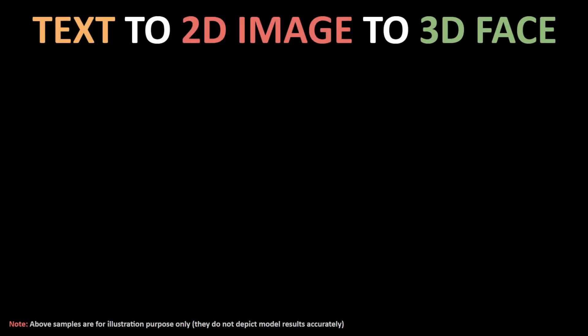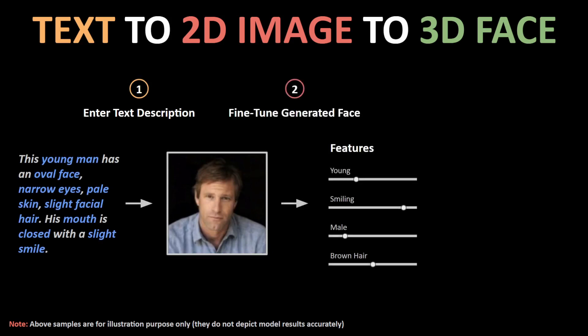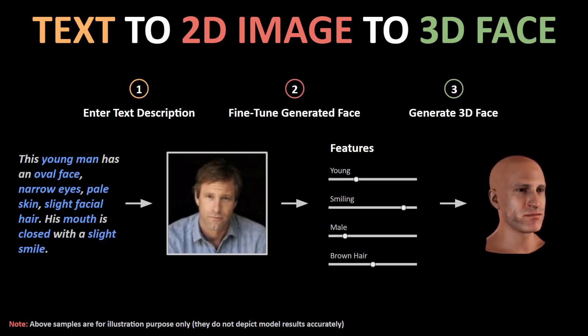Now imagine if we can combine all these methods into a single framework — we could easily build a tool that first takes a text description input and produces a random face fitting that description. Then we can fine-tune this generated image to match our exact imagination with a few attribute sliders, and then use this to construct a 3D face from it. This would make the entire process highly automated and extremely simple and fun to experiment with.